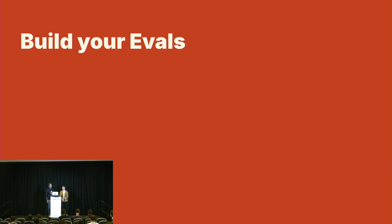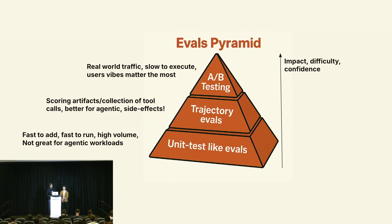Now you have a good short list of failure modes to work on first, and it's time to start building evals. We've realized over time that there are different types of evals, and they can be placed into a hierarchy that resembles the testing pyramid: unit test-like evals at the base, end-to-end or trajectory evals in the middle, and the ultimate evaluation method — A/B testing with staged rollouts — at the top.